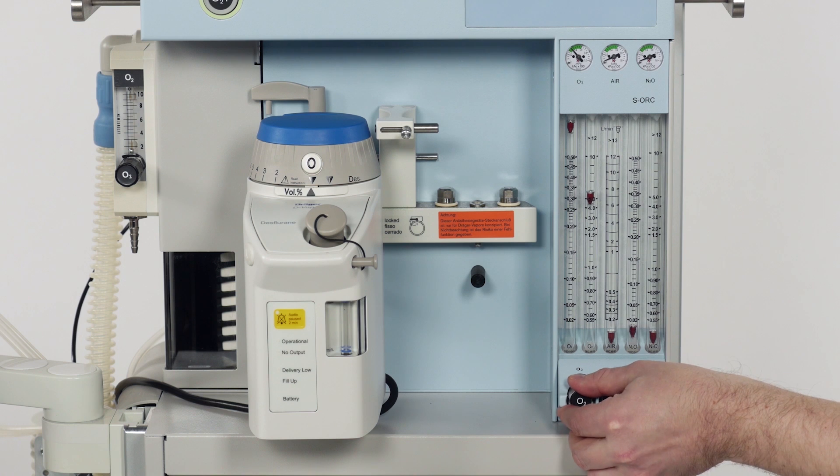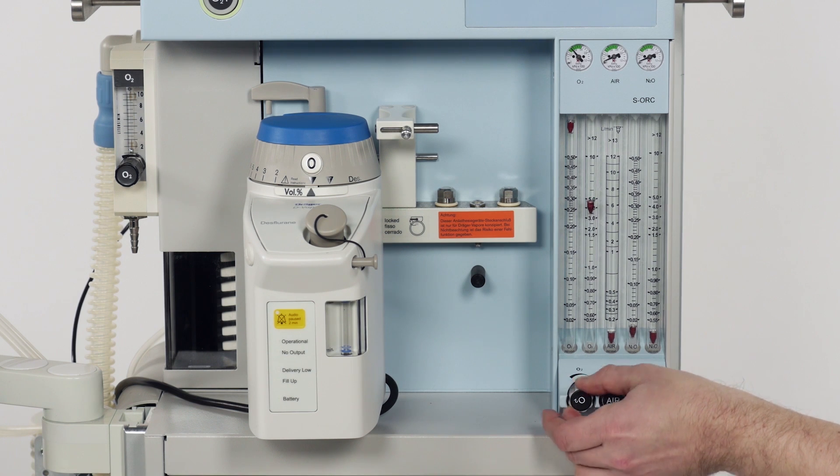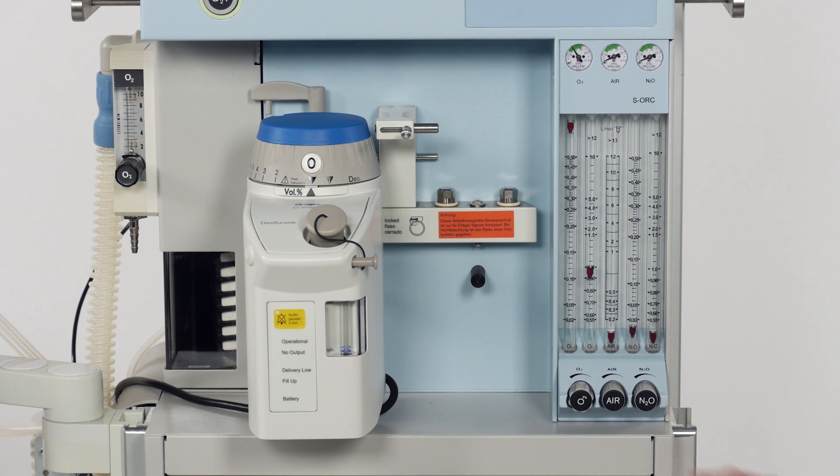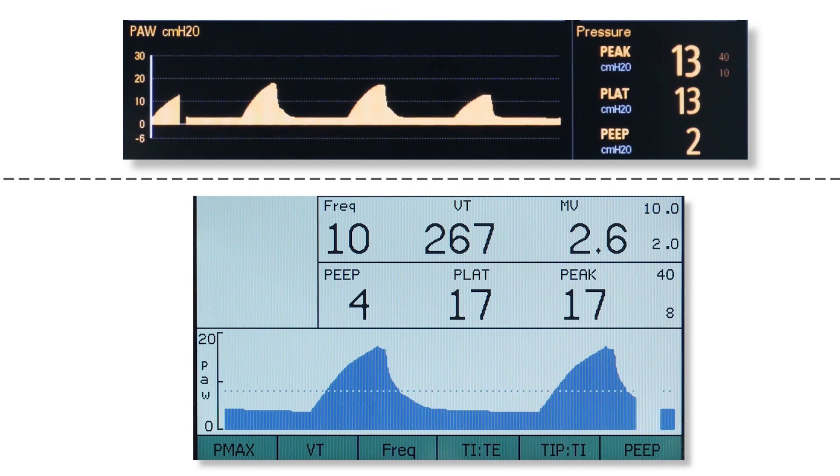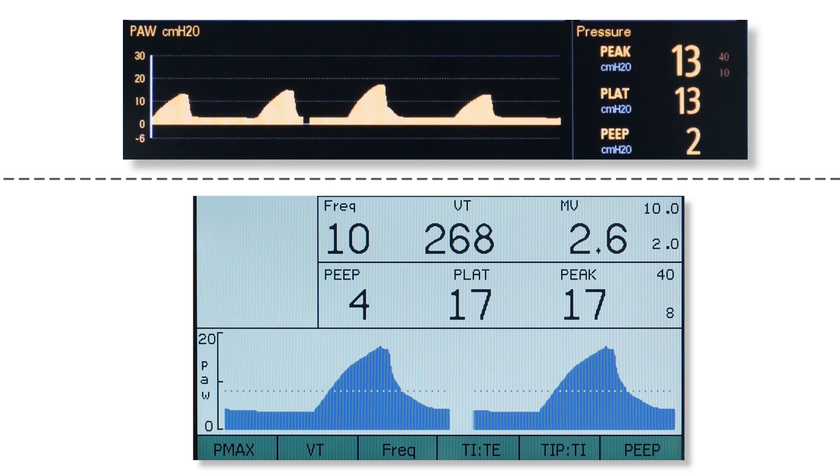Now we close the fresh gas flow valves back down to 1 liter per minute of total gas flow. Again, the tidal volume and pressure remain unchanged on the Fabius. On the fresh gas compensated anesthesia device, the airway pressure and tidal volume drop as a result of decreasing fresh gas flow.